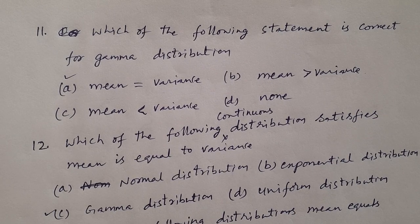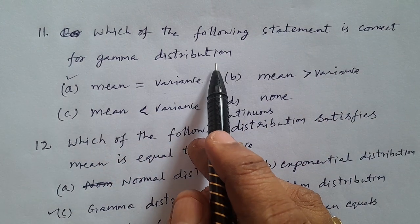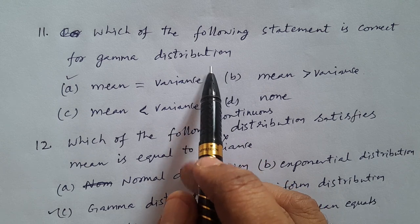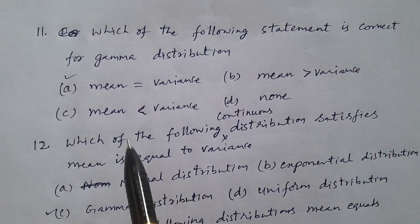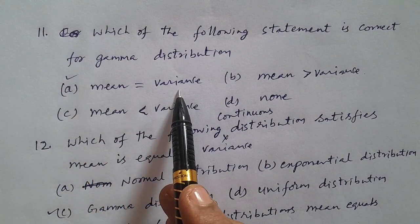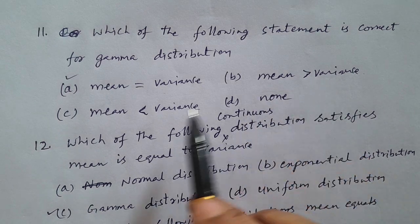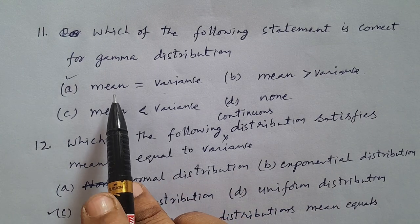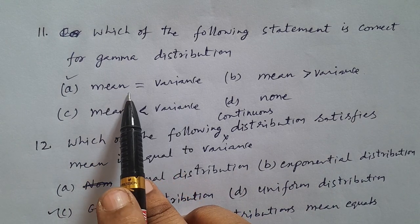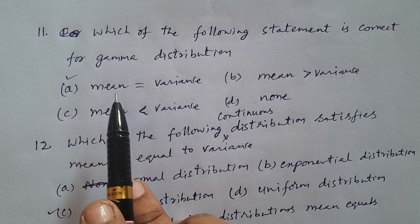Question number 11: Which of the following statements is correct for gamma distribution? Option A: Mean is equal to variance. Option B: Mean greater than variance. Option C: Mean less than variance. Option D: None. The correct answer is option A — mean is equal to variance. For gamma distribution, this statement is correct.